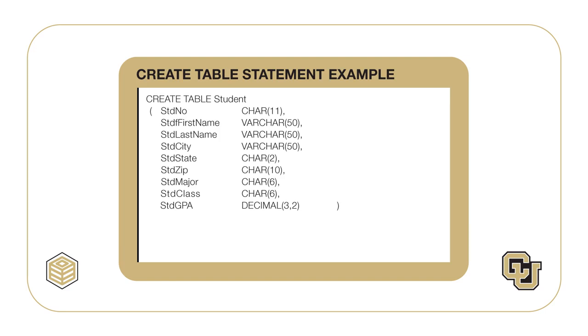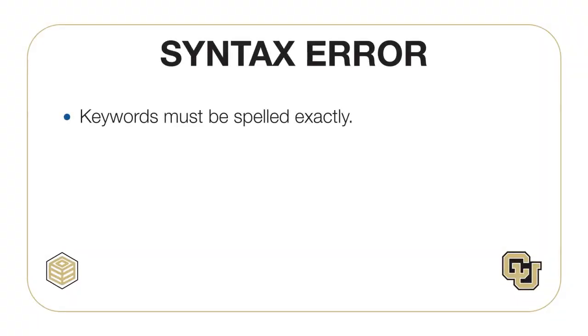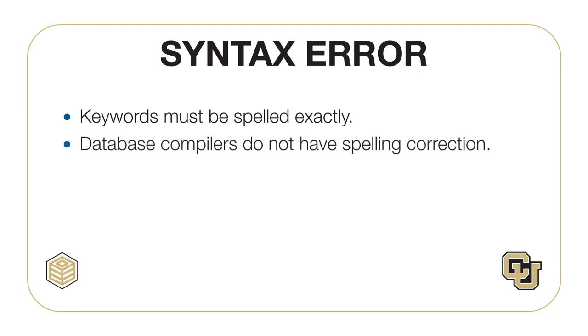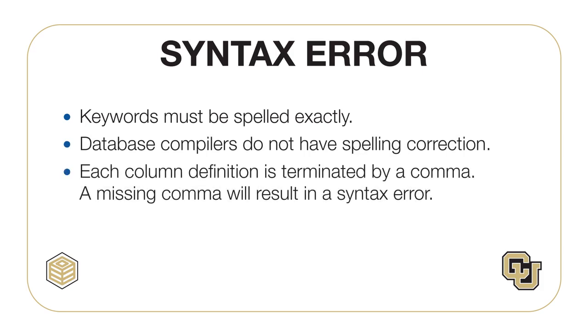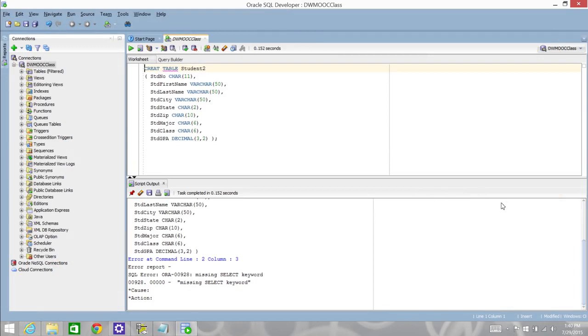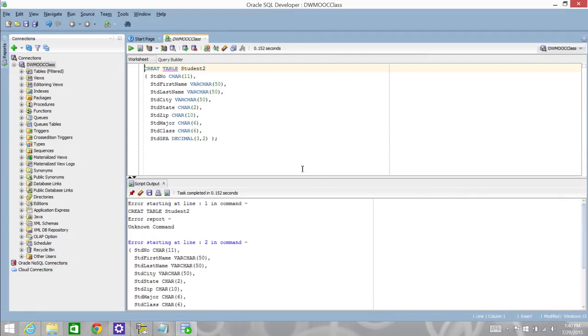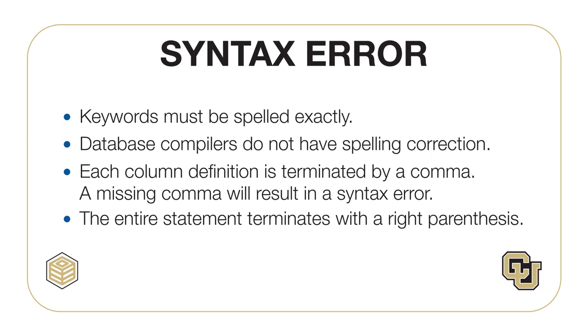Each data type has a name — for example, CHAR for character — and usually a length specification. It is vital to pay close attention to the syntax. DBMS compilers, that is software that reads SQL statements, are very exacting. Keywords must be spelled exactly; for example, misspelling TABLE as TBLE will cause syntax errors. Database compilers do not have spelling correction. Each column definition is terminated by a comma — a missing comma will result in a syntax error with a message that will not be easy to understand. The entire statement terminates with a right parenthesis.